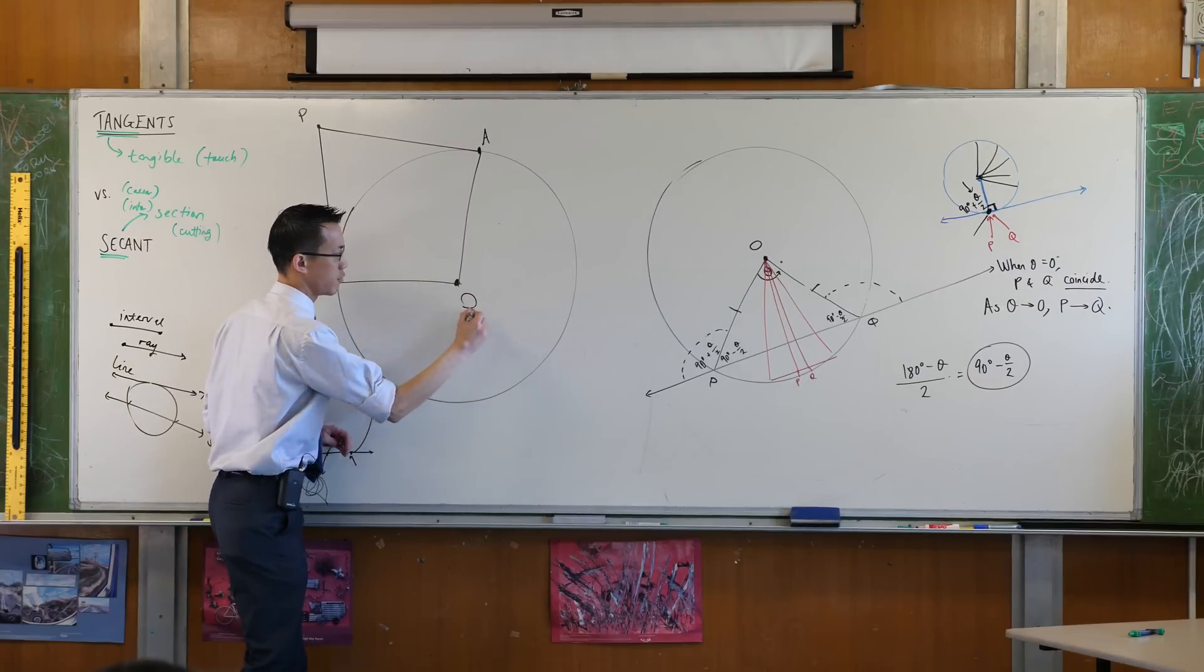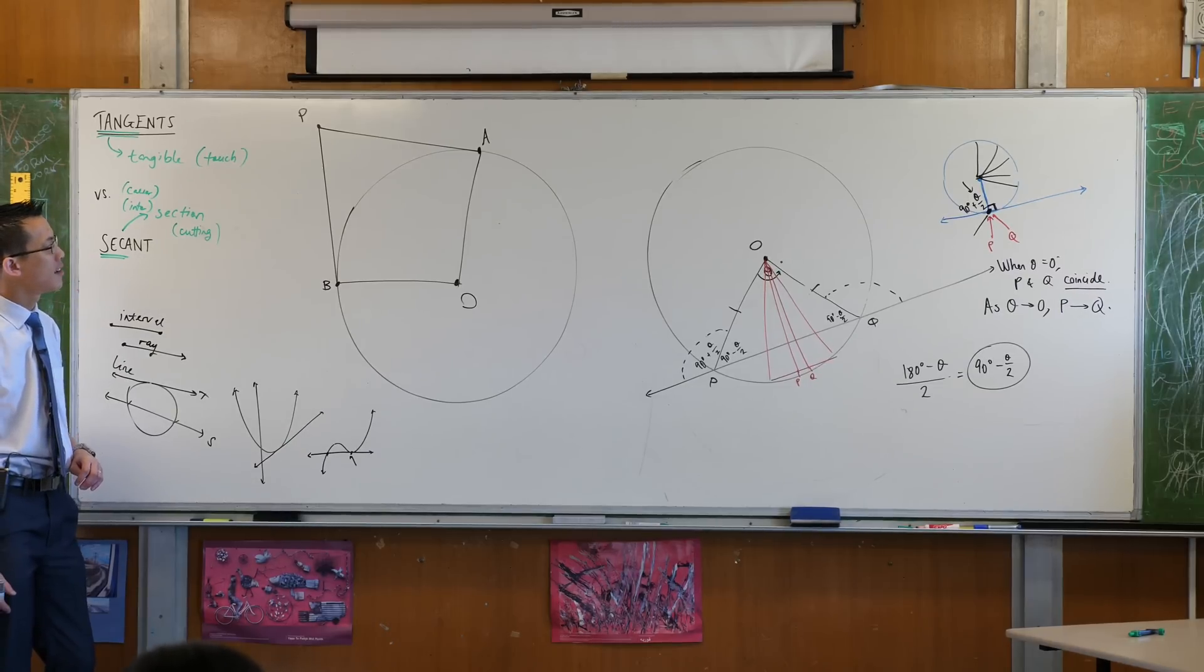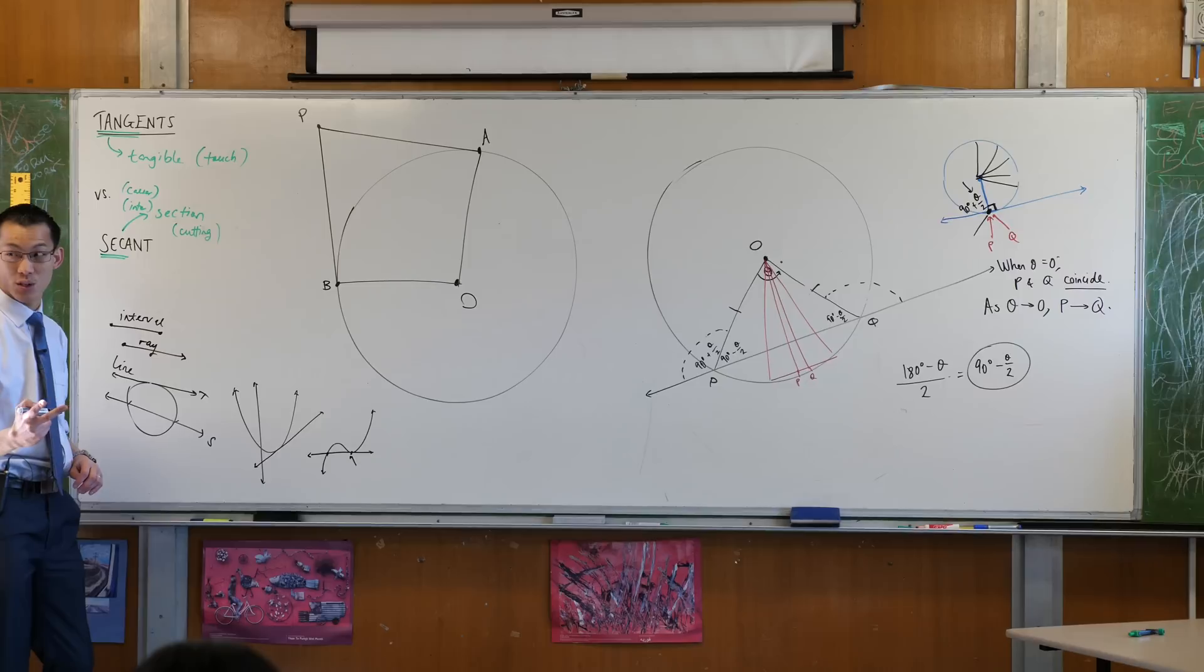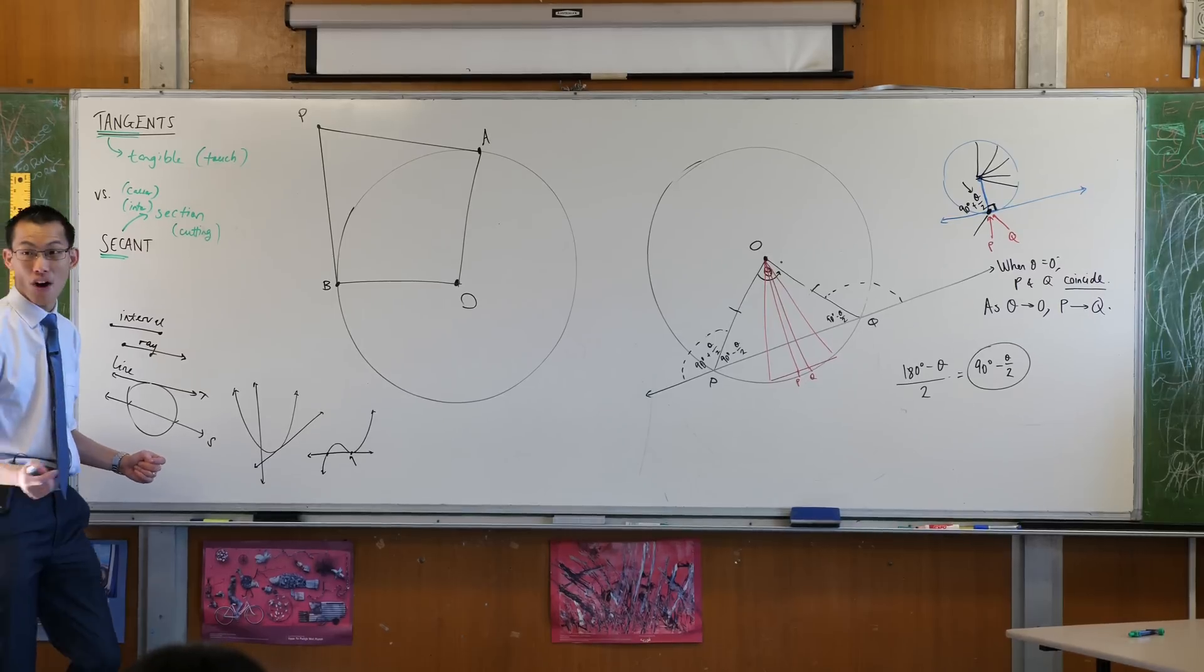If the center is O, which are the right angles? A which? There are two right angles in this diagram, where are they? They've got names, what would you call them? PBO.